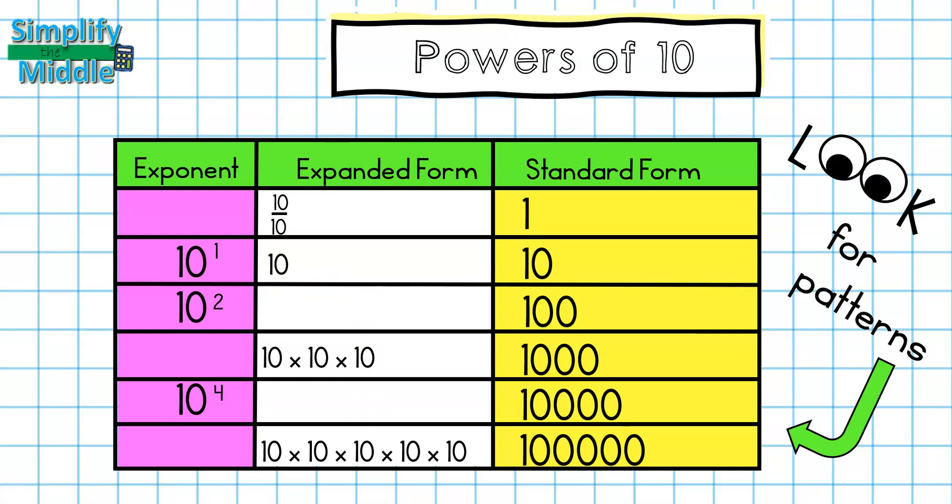I know from a previous lesson that the exponent is going to tell me the number of times to repeat the base. So for the expanded form of 10 to the second power, or 10 squared, I should be writing 10 two times. So this is simply 10 times 10.